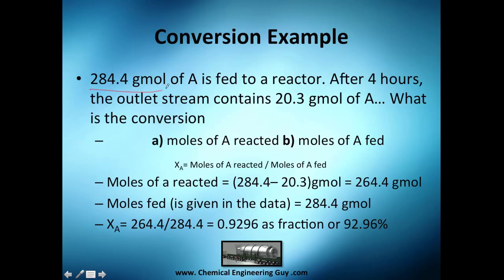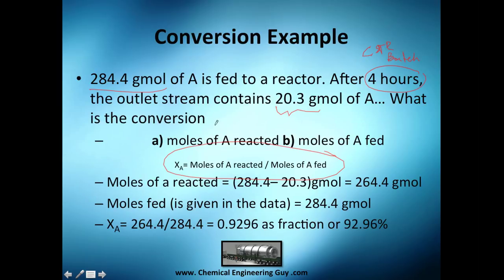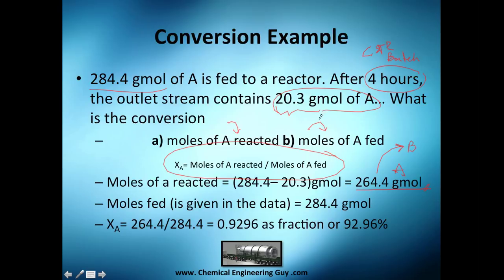Here's a worked example. We have 284.4 grams of A being fed to the reactor. After the reaction, the outlet stream has 20.3 grams of A remaining. To find conversion, we need the moles of A reacted, which is the difference: 284.4 minus 20.3 equals 264.4 grams of A that reacted.